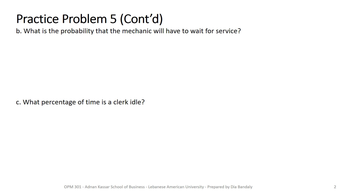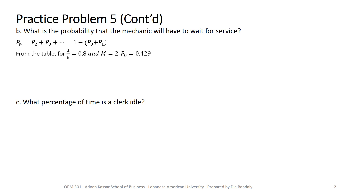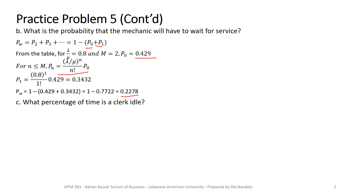For part B, what is the probability that a mechanic will have to wait? Pw equals P2 plus P3 plus ... and so on — exactly the same logic as the previous problem since we have the same number of servers. We find P0 from the table as 0.429. Since 1 is less than M (which is 2), we use the formula to find P1. Adding P0 and P1, then subtracting from 1, gives a probability of waiting of 22.8%.